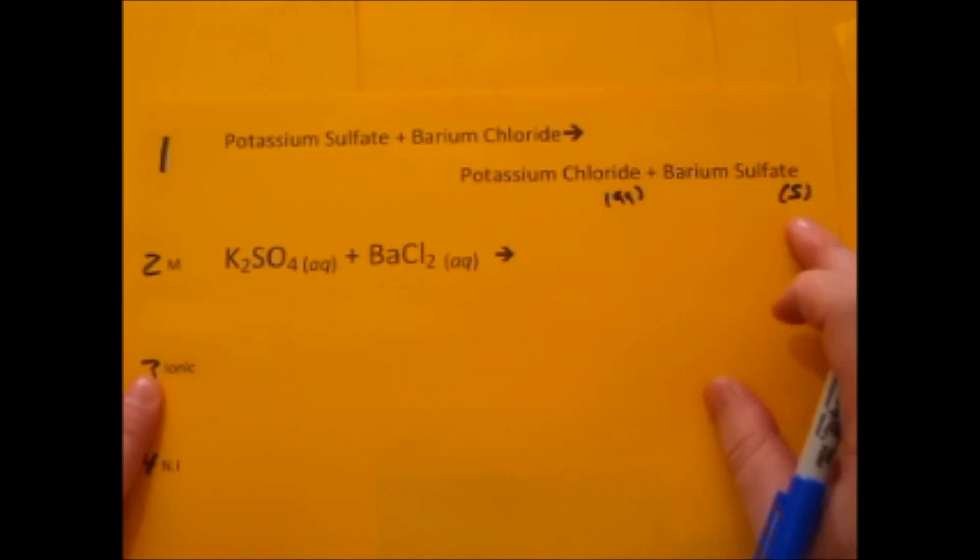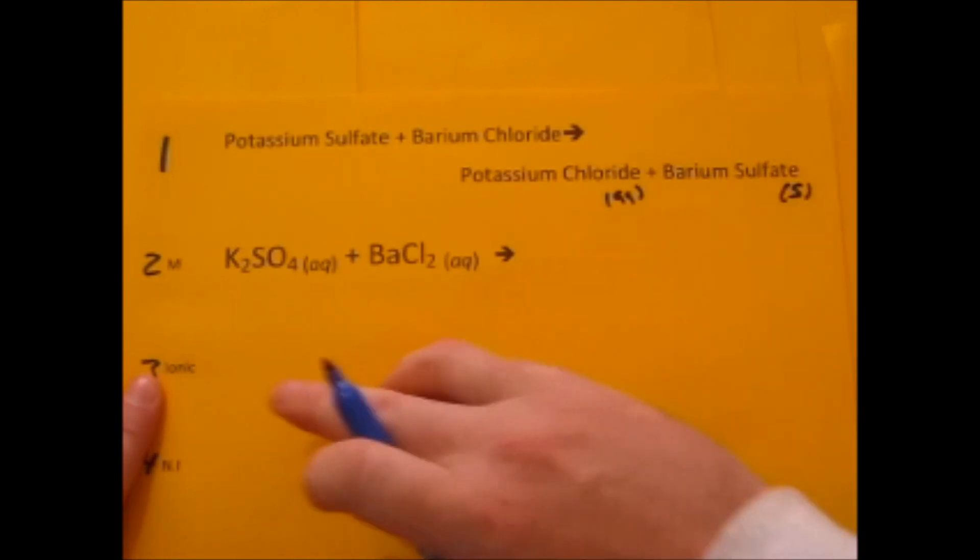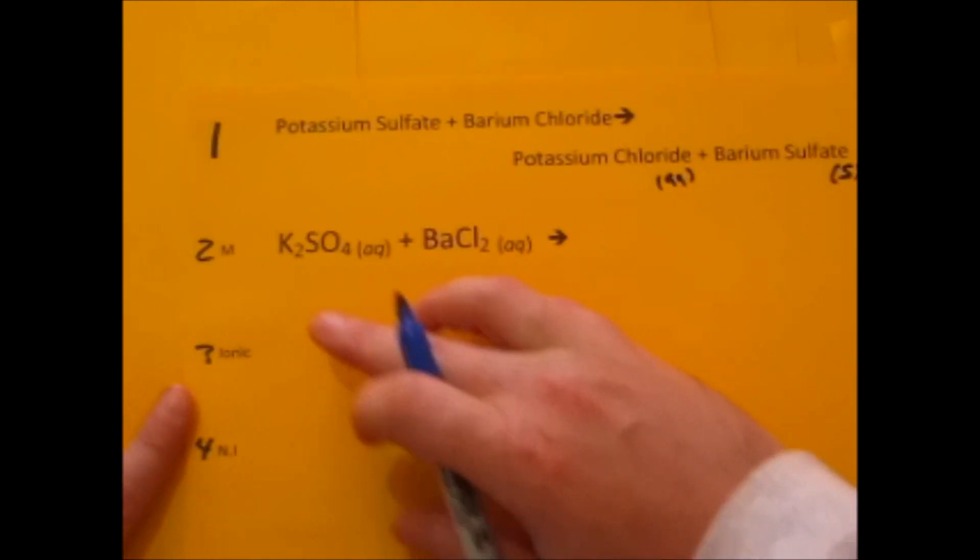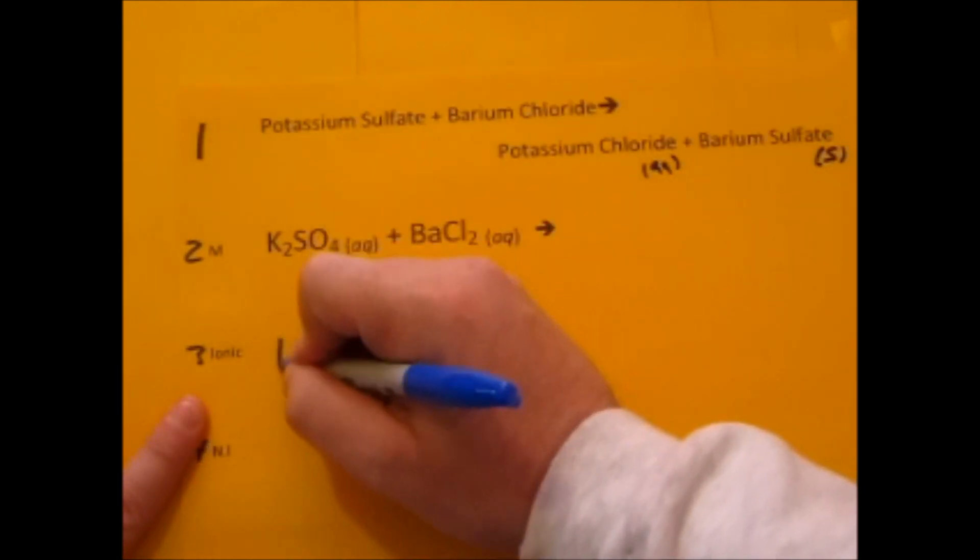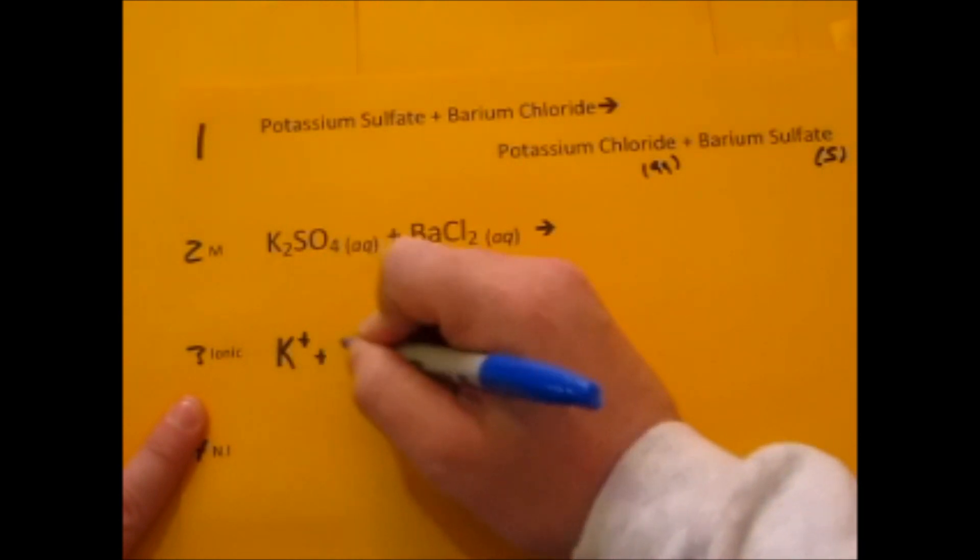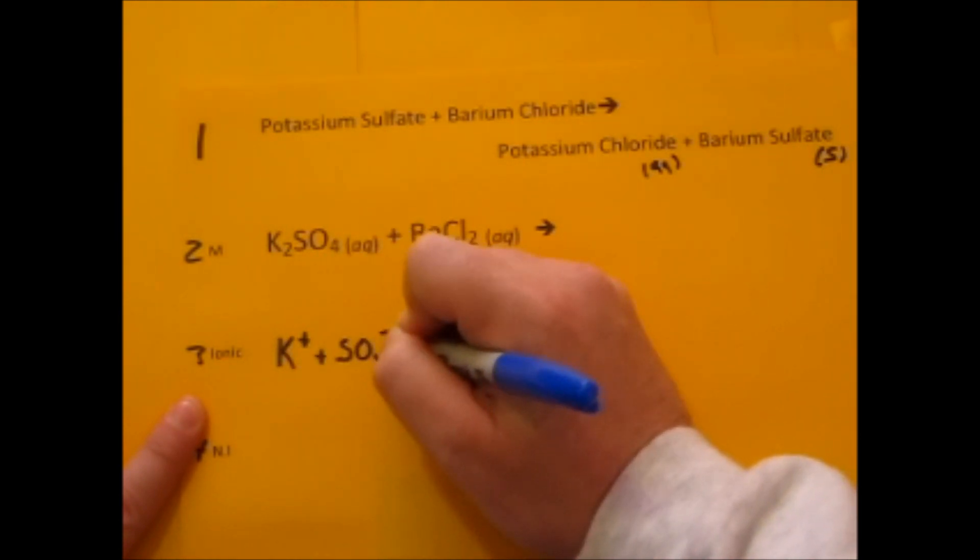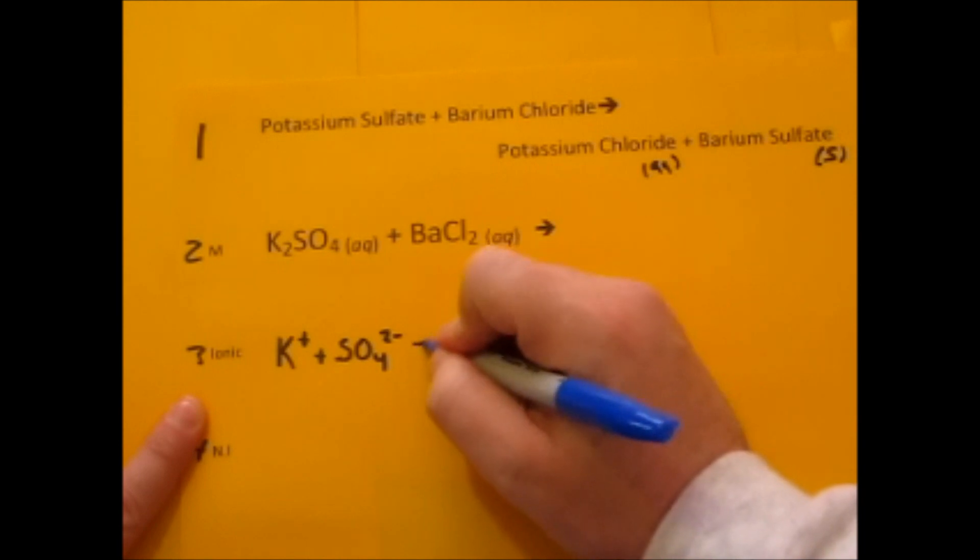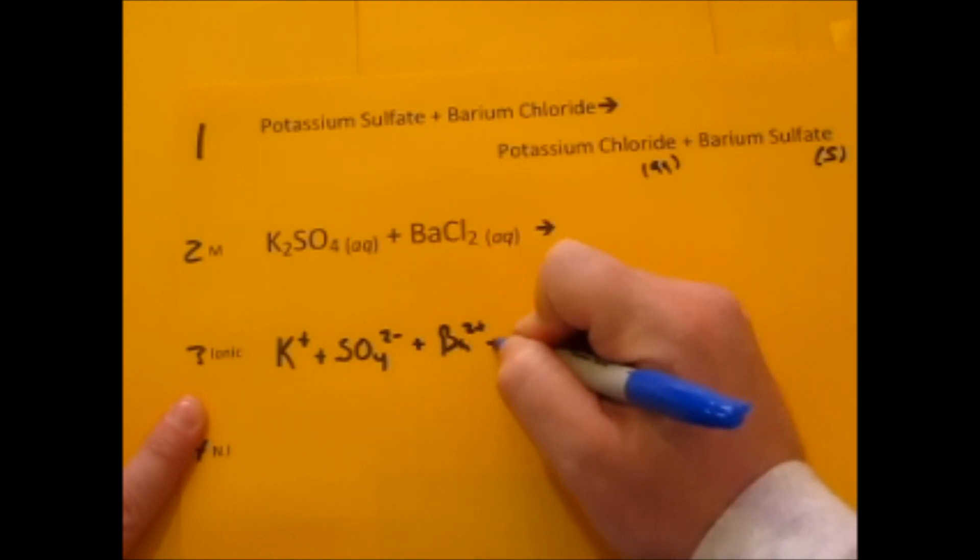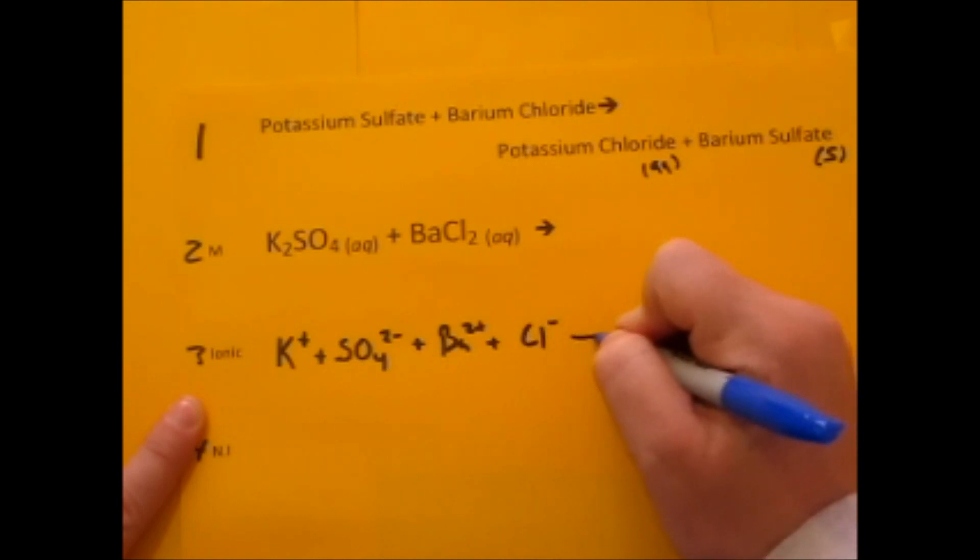So since it's a solid, you're going to jump down to line three and write the ions involved in this reaction. Since we have potassium sulfate, potassium's ion is K⁺ and sulfate's ion is SO₄²⁻. Ignore the numbers there for now. Barium is Ba²⁺ and chloride is Cl⁻. Put your arrow there.